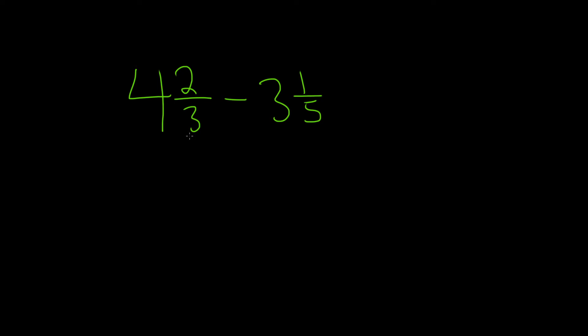So you take this 3, and you multiply it by the 4. So 3 times 4 is 12, and then you add it to the 2. So 3 times 4 is 12, 12 plus 2 is 14. So you get 14 over 3.